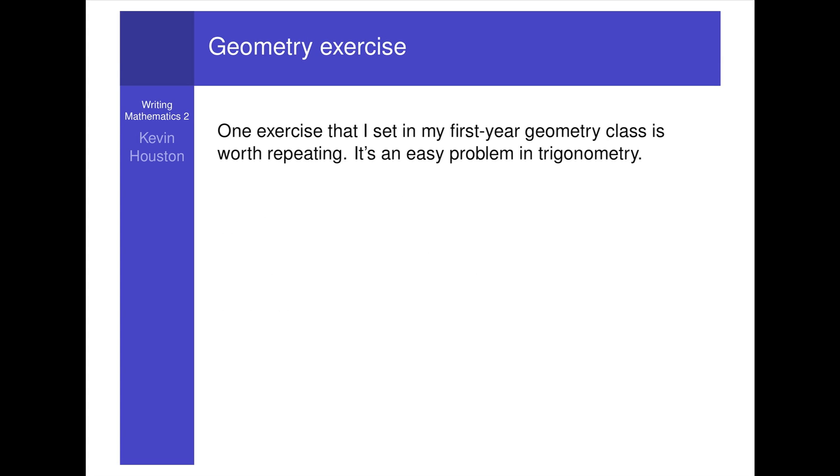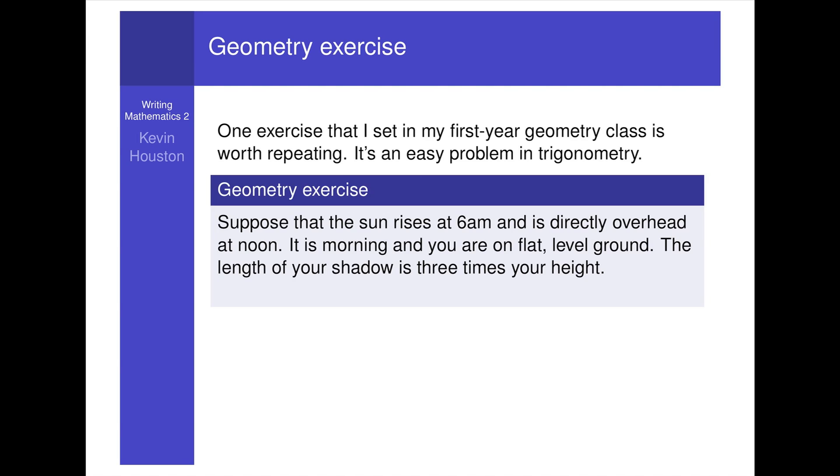One exercise that I set to my first year geometry class is worth repeating. It's an easy problem in trigonometry. I can't remember who told it to me, so my apologies to them for not giving them credit. The exercise is, suppose that the sun rises at 6am and is directly overhead at noon. It is morning and you are on flat level ground. The length of your shadow is three times your height. What time is it to the nearest minute?